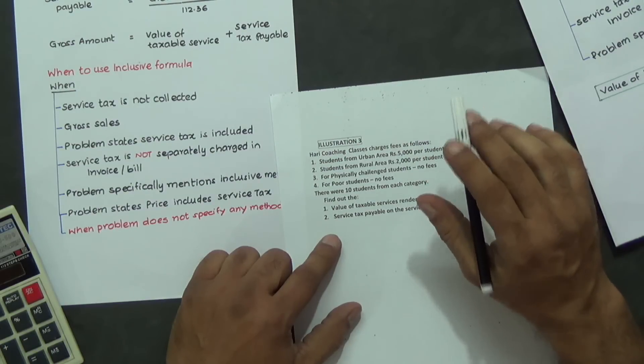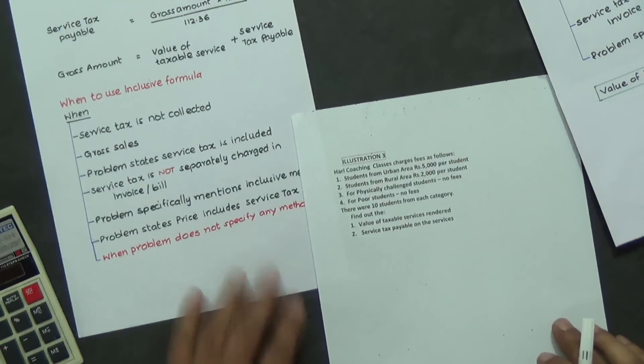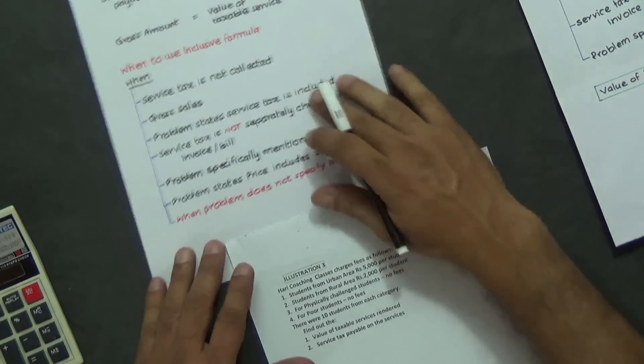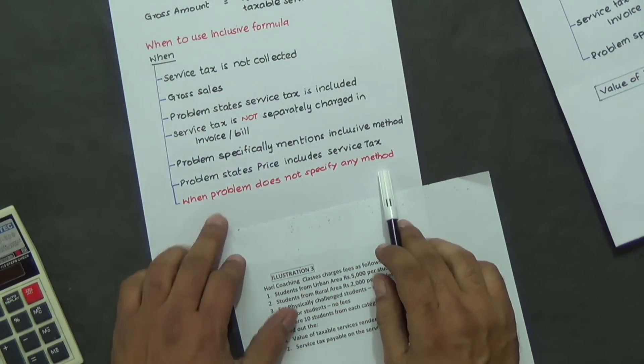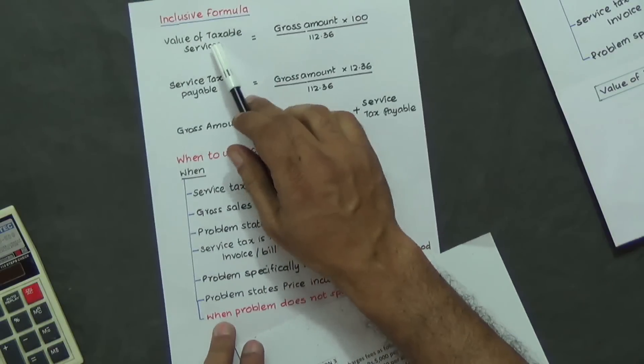It does not give a clue whatsoever. In those sort of cases, we have this note. When problem does not specify any method, we'll have to use inclusive formula.